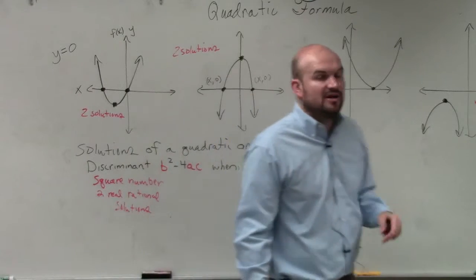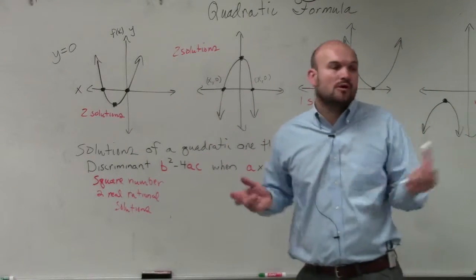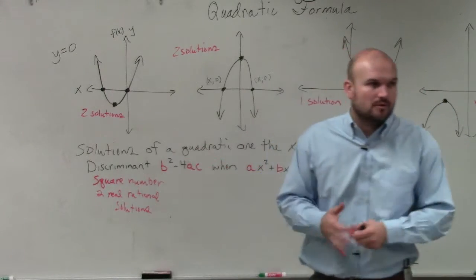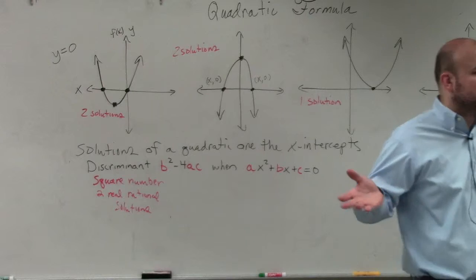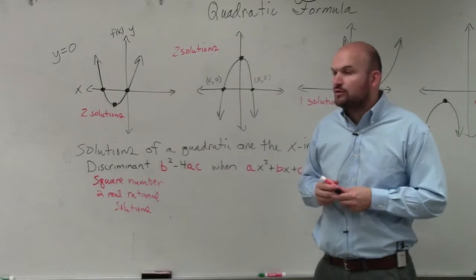So if you do b squared minus 4 times a times c, and you get a square number, 16, 4, 25, 100, 36, 49, 81, 144, any number you can take the square root of, your answer is going to have two real rational solutions.